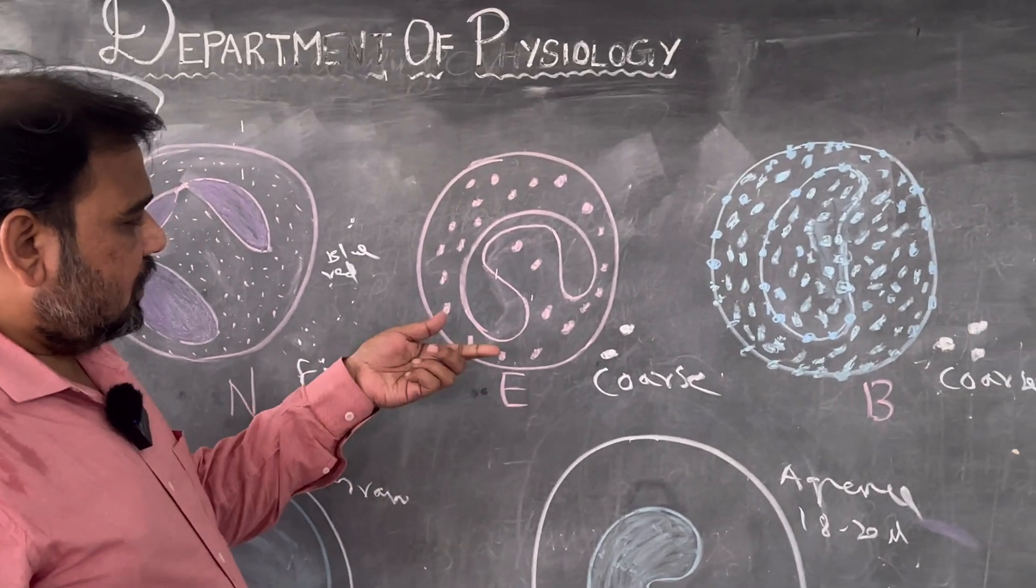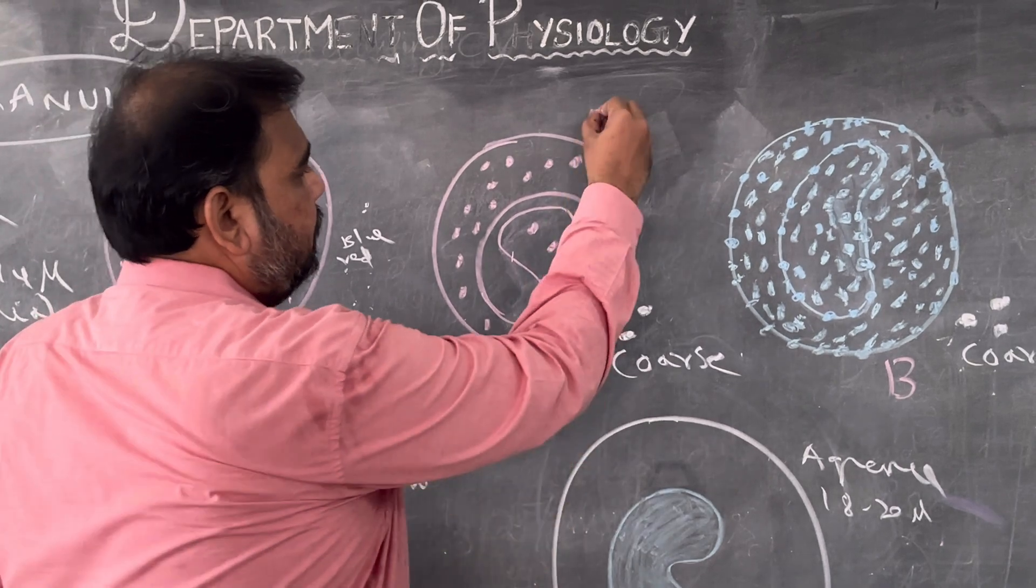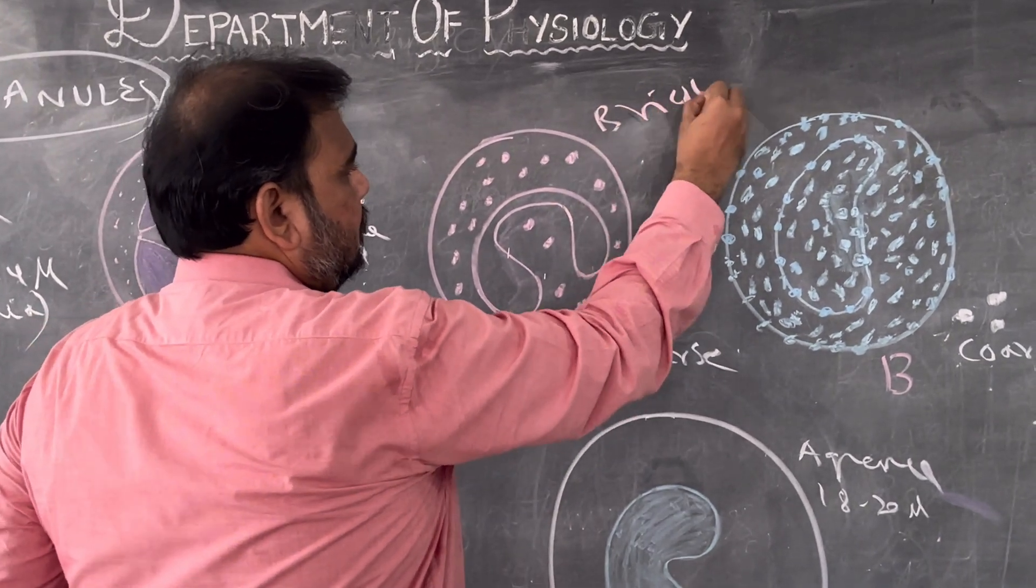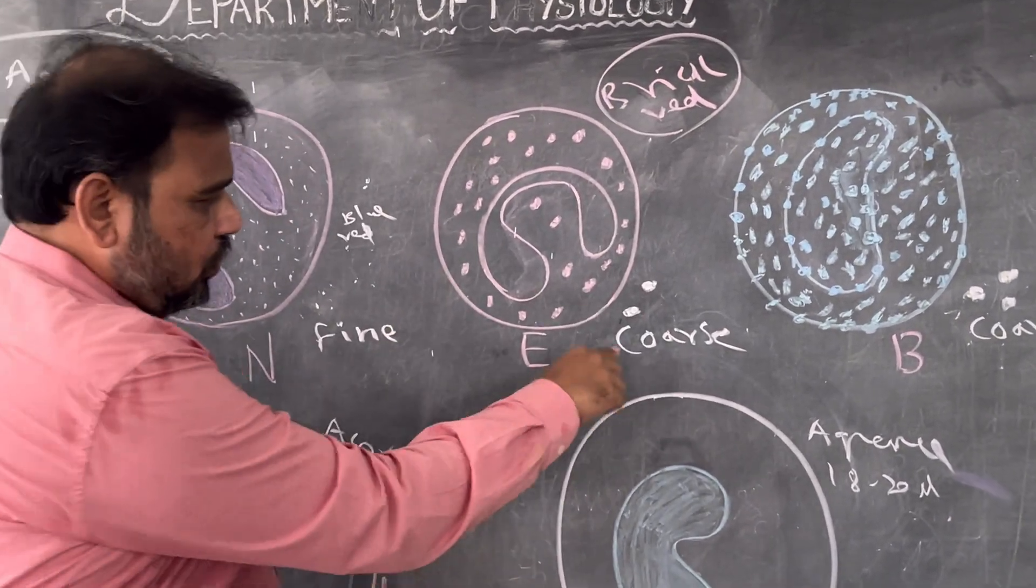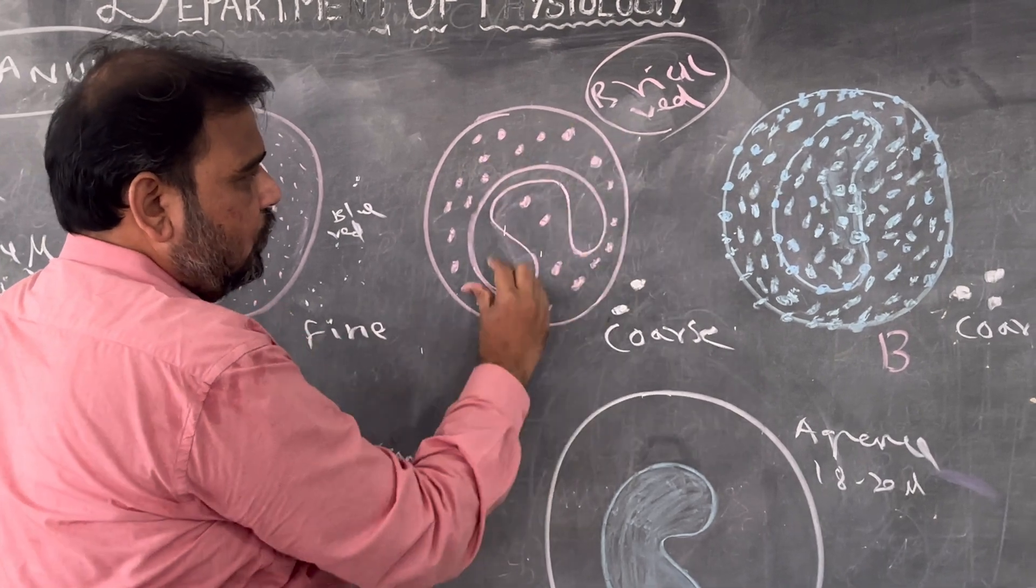Here is eosinophil. See here I used only one color which is brick red. So eosinophil contains coarse, thick, you can see here coarse and brick red.